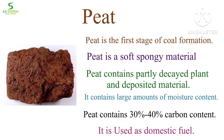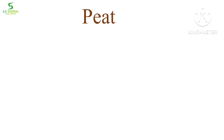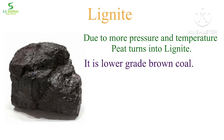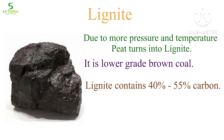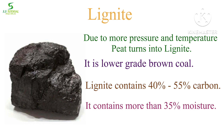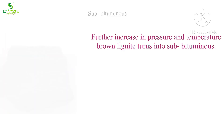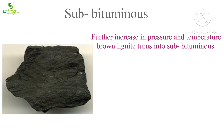Peat is normally used as a domestic fuel. When pressure and temperature increase, peat turns into lignite. Lignite is a lower-grade brown coal containing 40 to 55 percent carbon and over 35 percent moisture. Therefore, lignite burning results in more carbon dioxide emission. With further increase of pressure and temperature, brown lignite turns black in color, which is known as sub-bituminous.